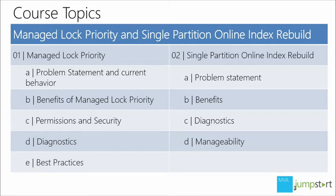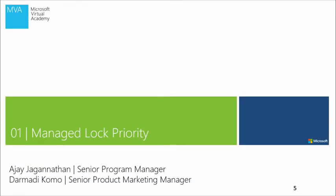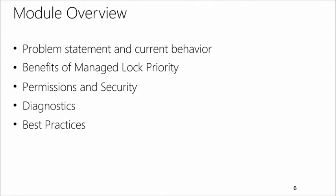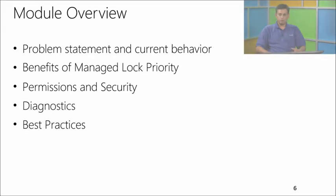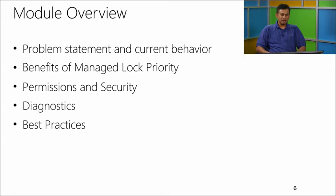Can you tell us more about Managed Lock Priority and how does it work? Sure. The first improvement is called Managed Lock Priority — you may also hear me use the keyword MLP for short. Before we dive into the feature itself, I'd like to go over the current problem statement, the current behavior that users experience, and what we are trying to solve. We'll also look at benefits, required permissions, and some diagnostics that have been enabled.